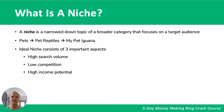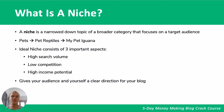An ideal niche consists of three important aspects. First, a high search volume — there are enough people searching for it. Second, low competition — not a lot of other bloggers in the same or related areas. And third, a high income potential — meaning your blog can actually make money.